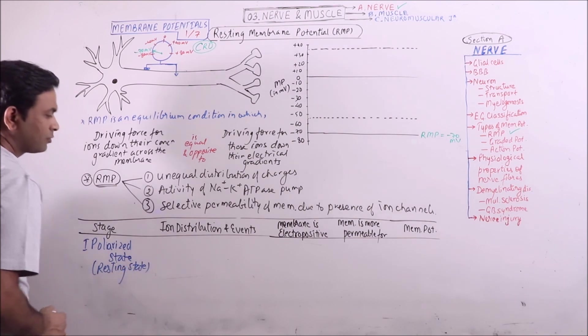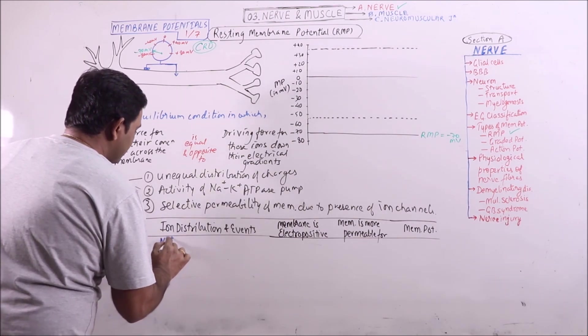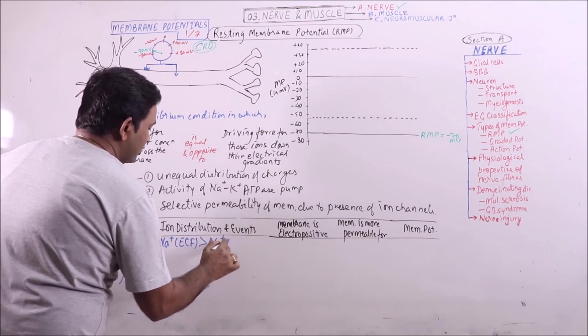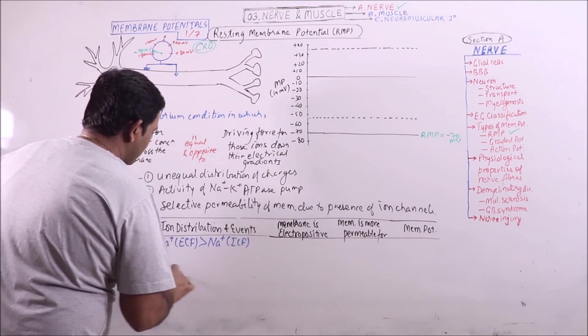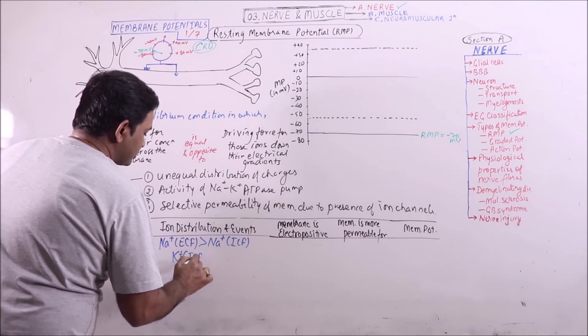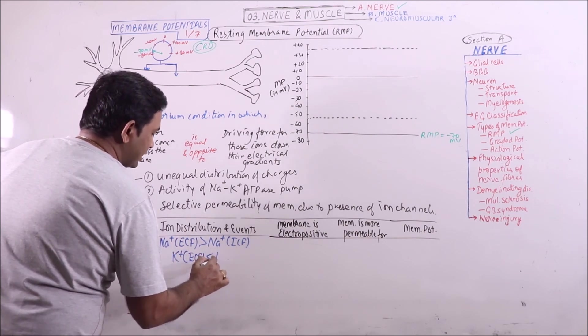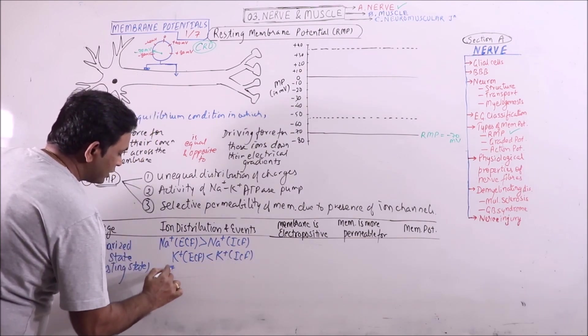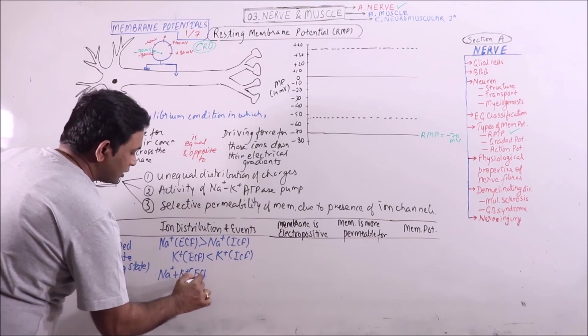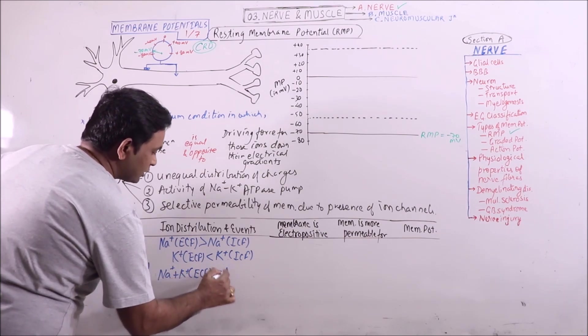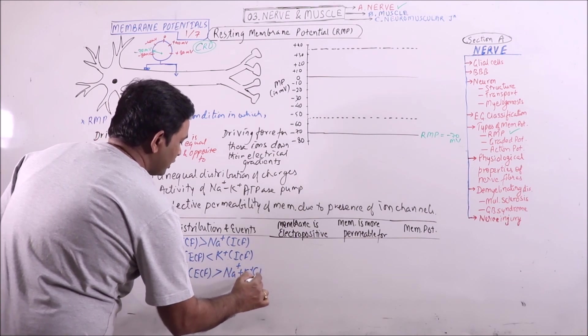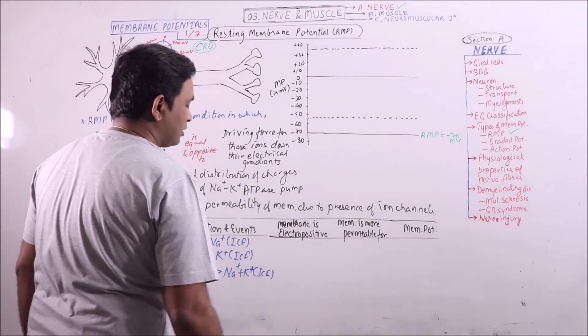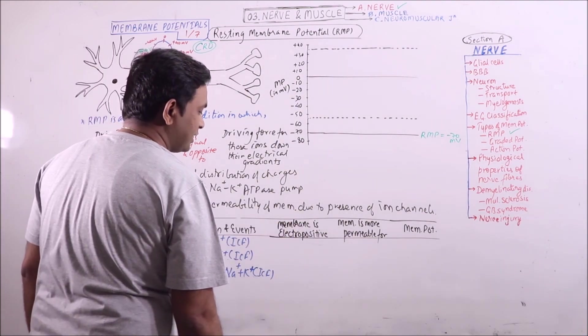And in this state, if ion distribution is concerned, then sodium in extracellular fluid is more than sodium in intracellular fluid, while potassium in extracellular fluid is less than potassium in intracellular fluid. Sodium plus potassium in extracellular fluid is more than sodium plus potassium in intracellular fluid. So, the cations are more on outer surface or in the ECF.